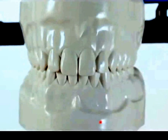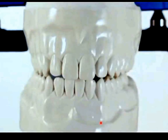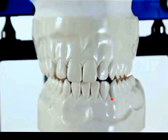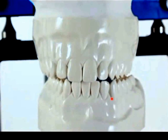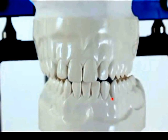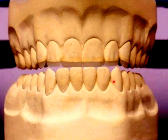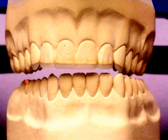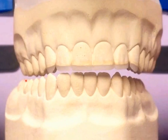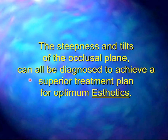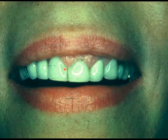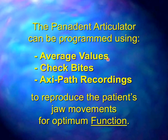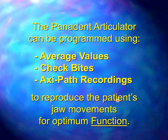We can verify simultaneous equal bilateral tooth contacts when the joints are in the socket, verify an incisal position with no posterior interferences back into full occlusion, and look at canine guidance — making sure we have clearance on the working and non-working side with no interferences going back into occlusion. The steepness and tilts of the occlusal plane can all be diagnosed for a superior treatment plan for optimum aesthetics, including the occlusal plane, dental midlines, and gingival tissues. The Panadent articulator can be programmed using average values, check bites, or the axiopath recorder to reproduce the patient's three-dimensional jaw movements for optimum function.